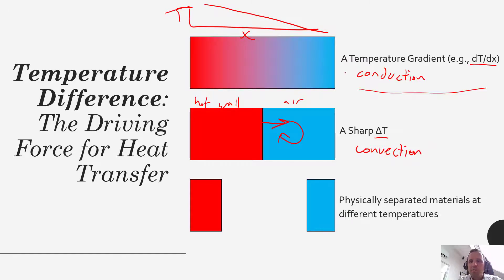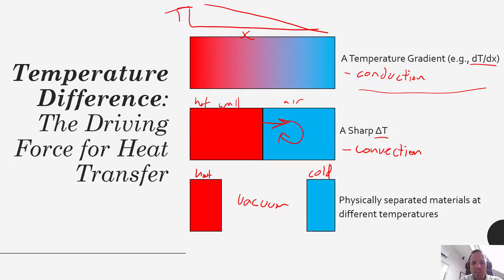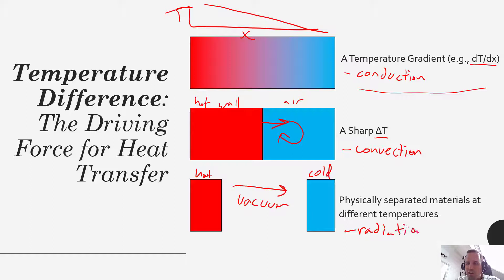Those are two of the modes of heat transfer. You can also have two materials that are completely physically separated — a hot material and a cold material — with even a vacuum in between the two. There is still a temperature difference, still a driving force. The phenomenon of heat transferring across a vacuum is called radiation. Radiation does not require a vacuum, but it can happen across even a vacuum between two different materials.